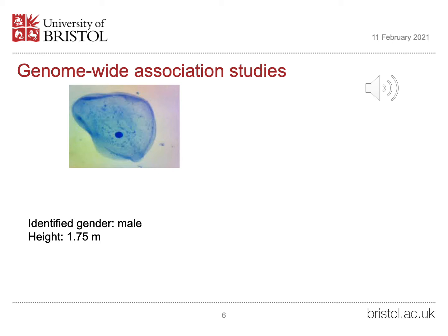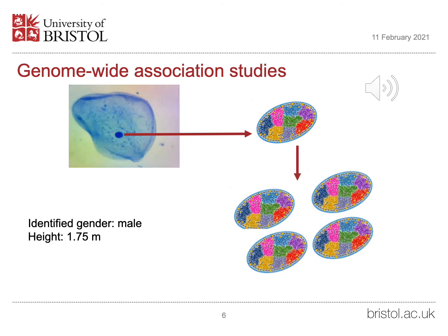At the same time, a measurement of the person's height is also recorded. The sample of the genome is taken to a sterile laboratory, where precautions are taken to prevent cross-contamination of DNA by the research workers. The DNA is extracted from the cheek cells and is copied many times using a machine known as a PCR.